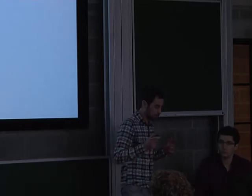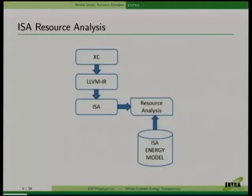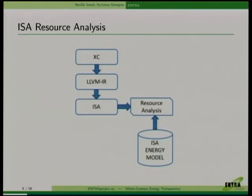What we are actually doing is resource analysis to infer energy cost functions for each function in our program, which are parameterized to the arguments of the function. By using the ISA energy model we created in the resource analysis, you can get functions that tell you, given the arguments of your function, how much is the energy consumption for that piece of code.